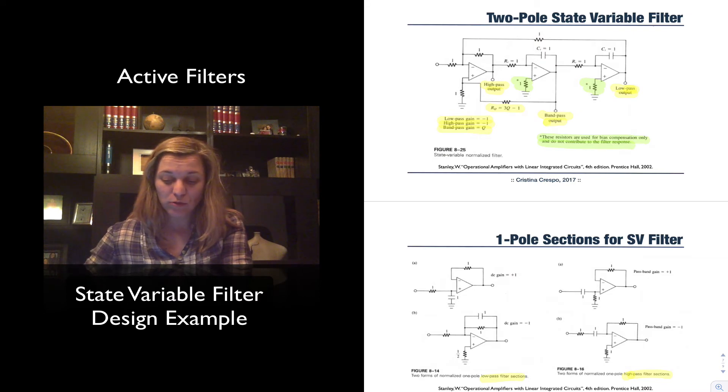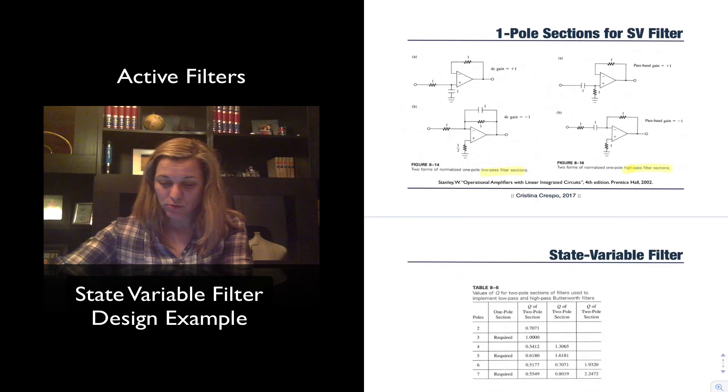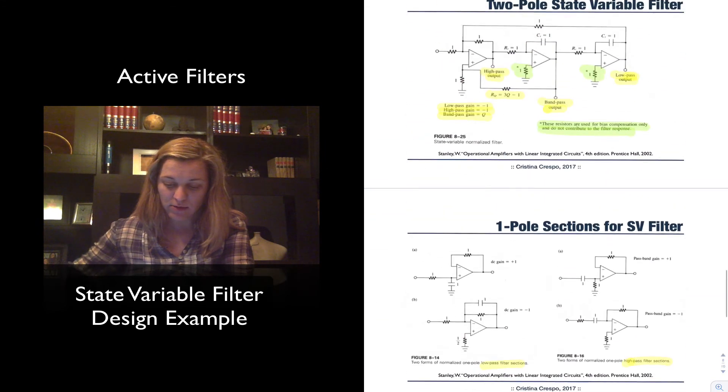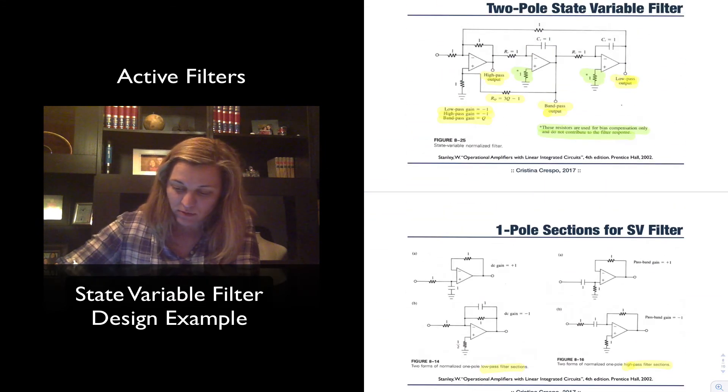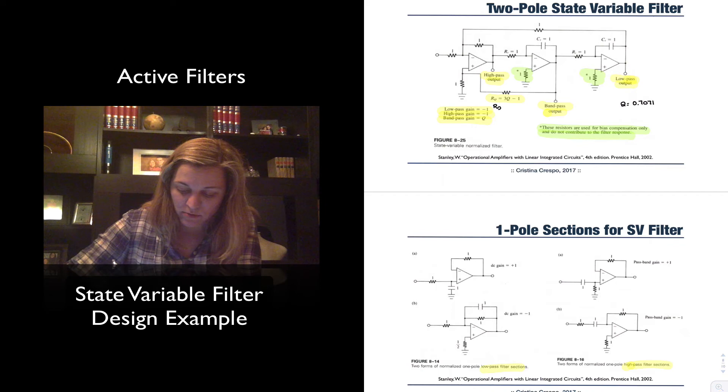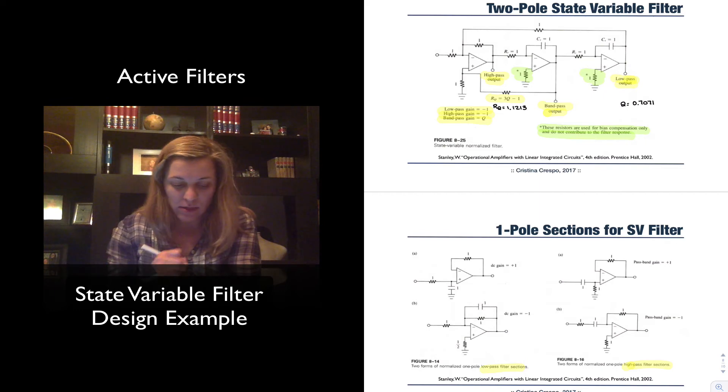So I'm just using the two-pole State Variable filter. My Q from the table is equal to 0.7071, so I can just enter that here. I'm going to say Q is equal to 0.7071 and therefore my RQ, which is 3Q minus 1, is equal to 1.1213 in this case.